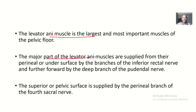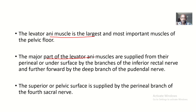The major parts of the levator ani muscles are supplied on the perineal or under surface by branches of the inferior rectal nerve, and further forward by the deep branch of the pudendal nerve. So it is supplied by two nerves: the inferior rectal nerve and the pudendal nerve.